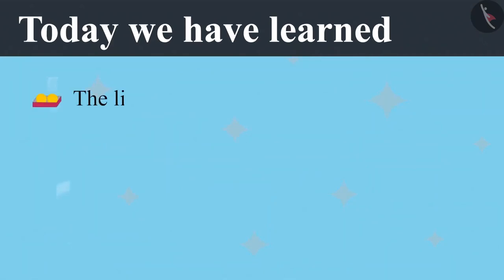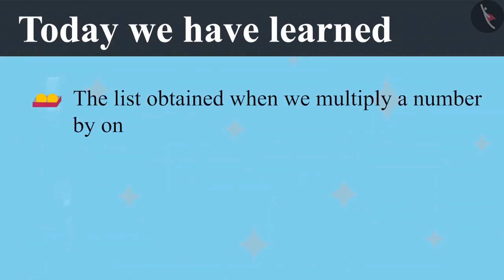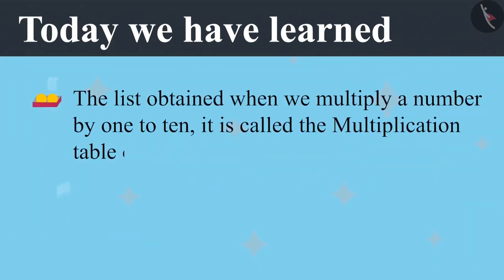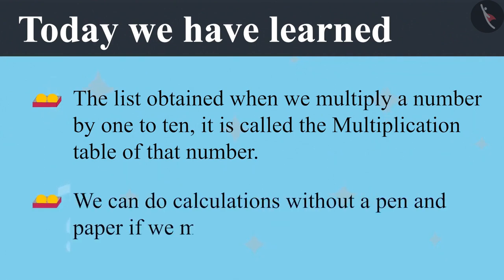Today we have learned that the list obtained when we multiply a number by 1 to 10, it is called the multiplication table of that number. And we can do calculations without a pen and paper if we memorize tables.